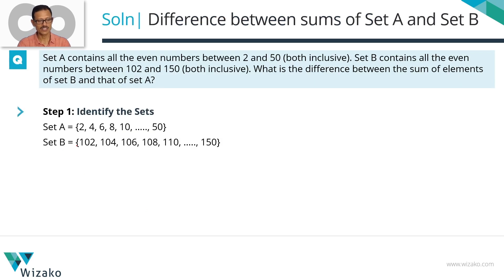Set A has the following elements: 2, 4, 6, 8, all the way up to 50. Even numbers up to 50. Set B starts with 102, has even numbers, goes all the way up to 150.